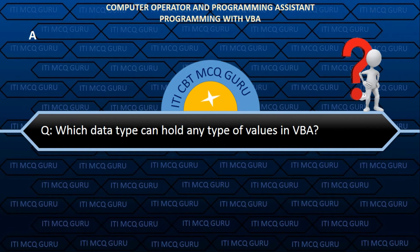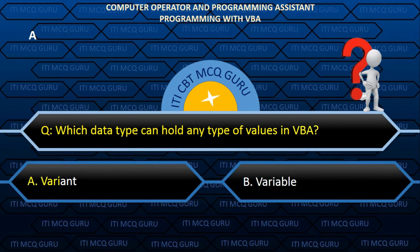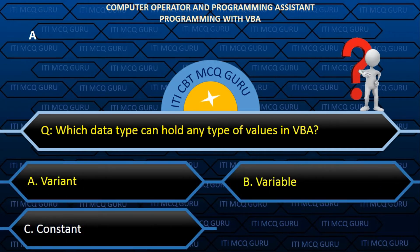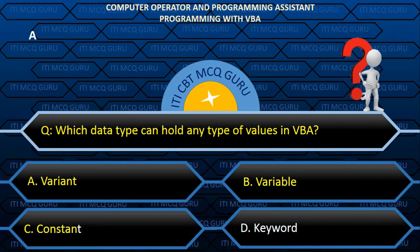Which data type can hold any type of value in VBA? Answer: A. Variant.